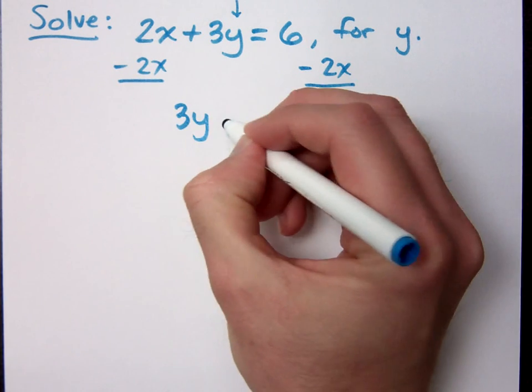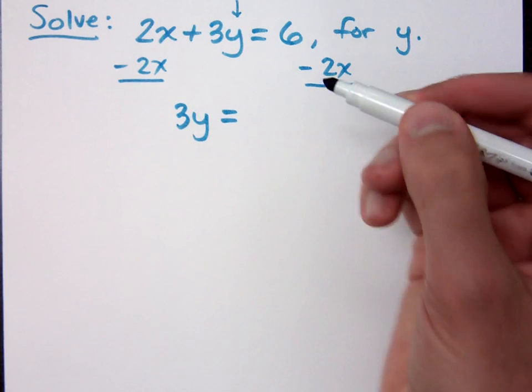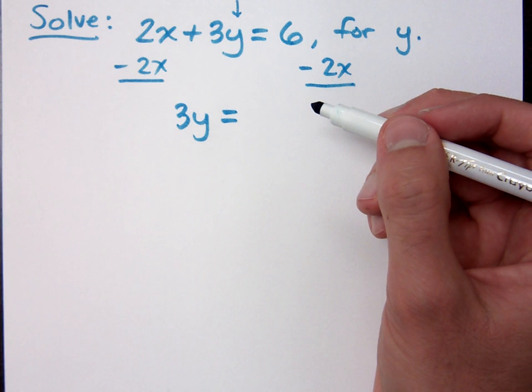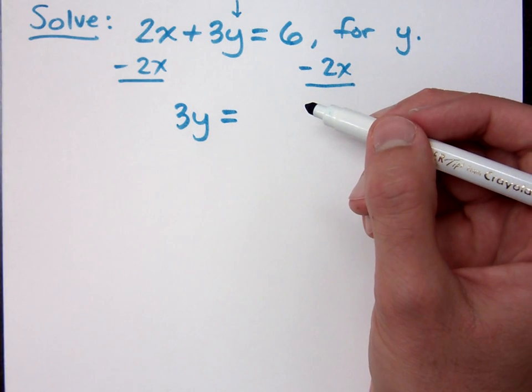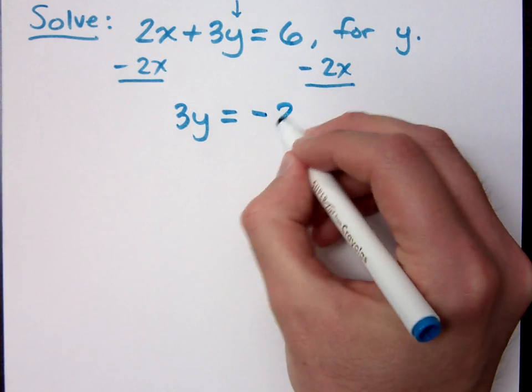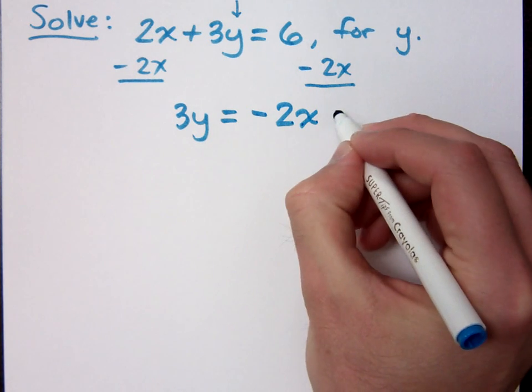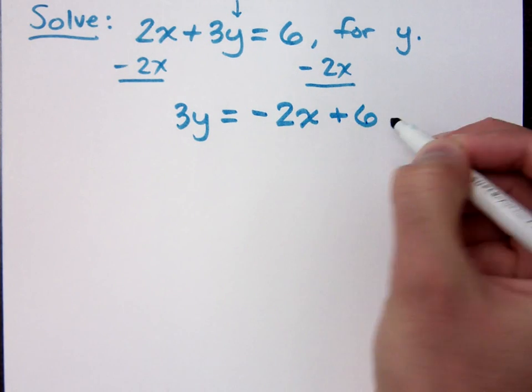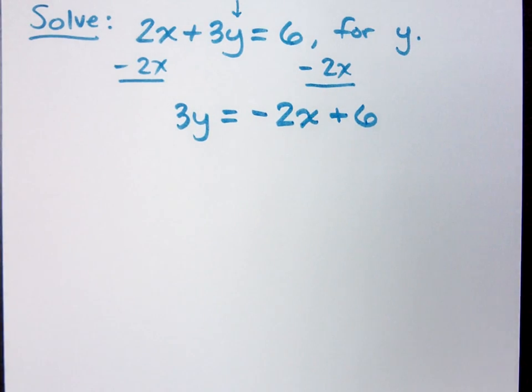I have 3y equals. Now, some of you may say 6 minus 2x, which is not wrong, but so that you can be prepared for what you're going to see in the next chapter, I want you to write the variable terms first. You put the constants at the end. That's just a standard way for writing things in mathematics.